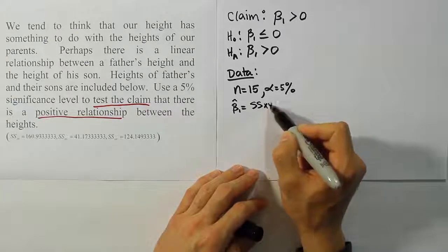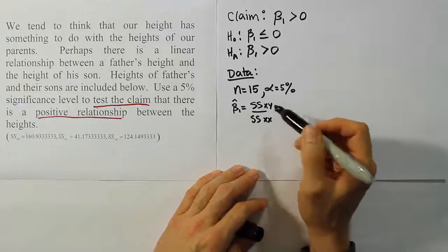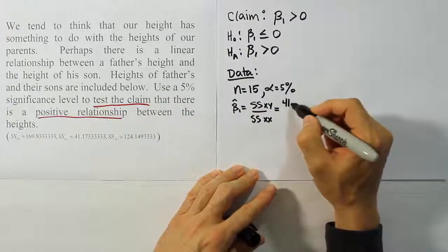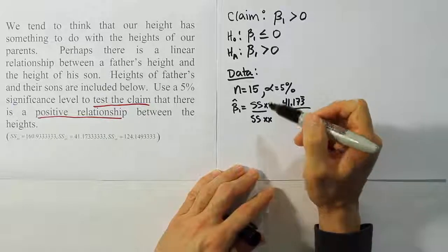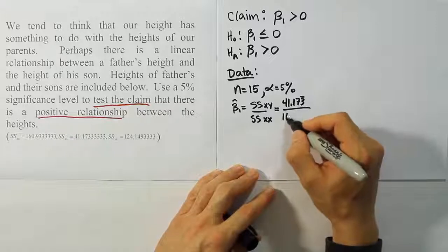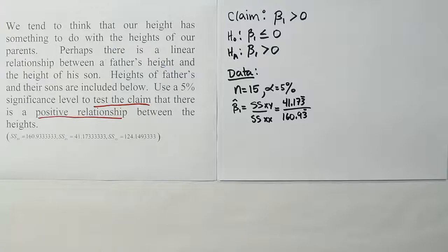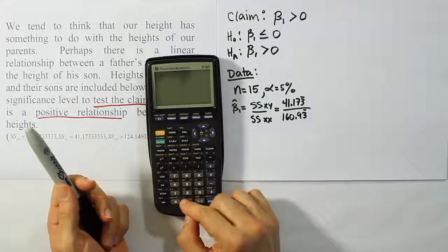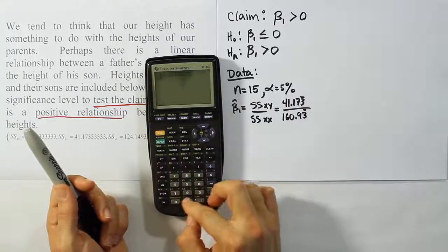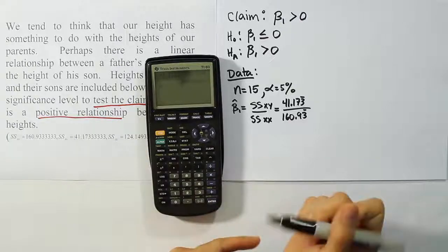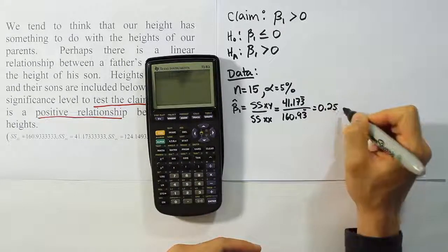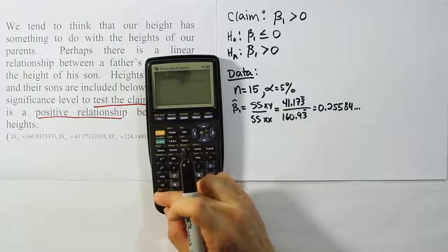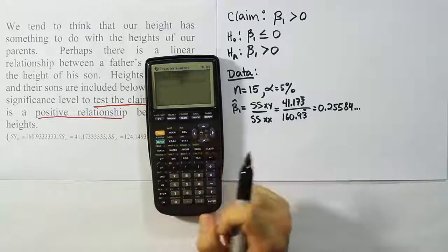So this is a value that we've worked with in the past. We're just going to plug these numbers in that they gave to us. They told us that SSXY is 41.173 repeating. So 41.173 repeating over SSXX, which they say is 160.93 repeating. Okay, let's take that information, enter it in our calculator, and come up with our point estimator. So 41.1733333 divided by 160.9333333. And when we're done with that, we get the answer 0.25584 and so on. So that's enough decimal places for us to use, but if you want to be more accurate, you could store that in your calculator as a variable. Like I could store that as X and hold on to it for later.